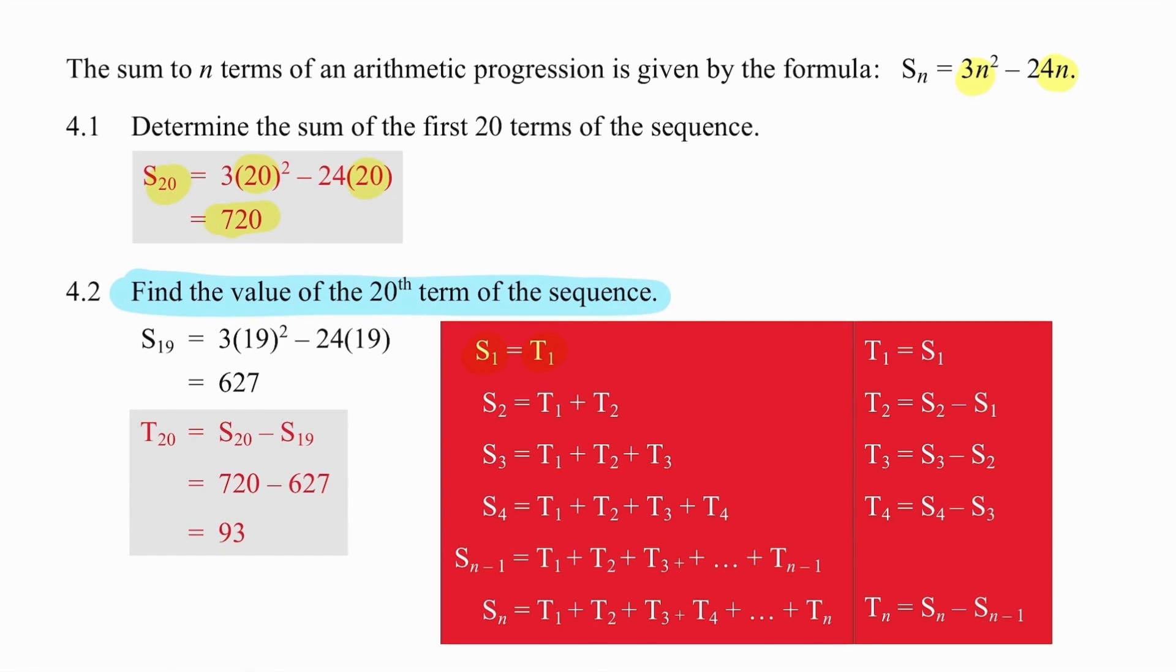So one term and S1 will always be equal. S2 will equal the sum of the first two terms. So if you're wanting to work out the second term's value, the second term is simply the difference between the sum of two terms and the sum of one term. The sum of three terms is worked out by adding term one, two, and three. So it is one term bigger than the sum of two terms. So if you want the term three value, you simply subtract and work out S3 minus S2.